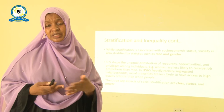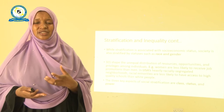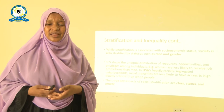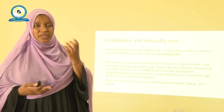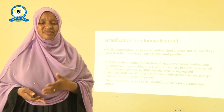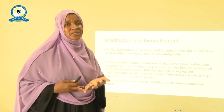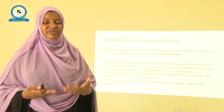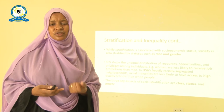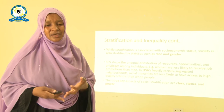In the U.S., for example, which is heavily racially segregated between blacks and whites, certain racial minorities including blacks and Hispanics are less likely to have access to good quality schools or other resources that white people enjoy by virtue of being white. The key aspects of social stratification are class, status, and power.